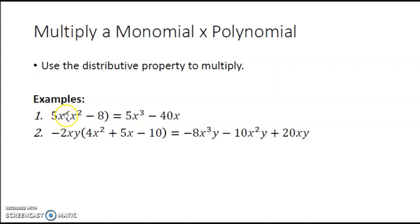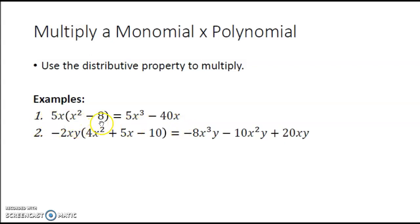In the first example, we have the monomial 5x times the binomial x squared minus 8. We are going to distribute the 5x to each of the two terms, beginning with 5x times x squared. The coefficient for x squared is 1, so we end up with 5 as the coefficient in the product, and x times x squared is x to the third. Next we multiply 5x times negative 8: 5 times negative 8 is negative 40, and the x remains. So the result here is also a binomial: 5x to the third minus 40x.